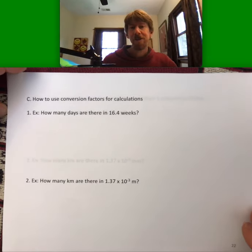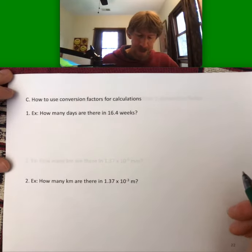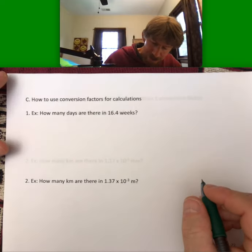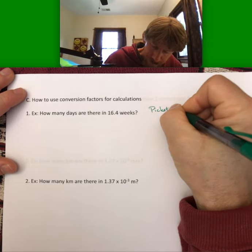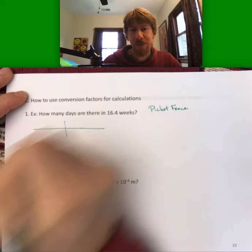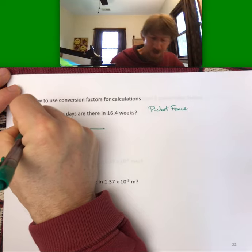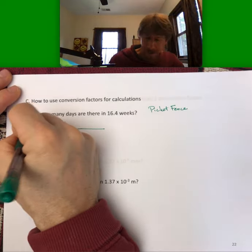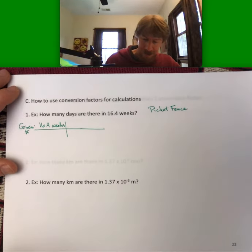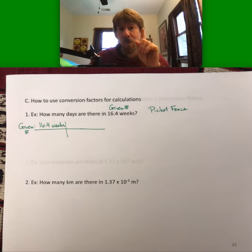Now let's do some actual calculations using unit conversion factors — some non-chemistry ones first. How many days are there in 16.4 weeks? The style of calculation I use is called the picket fence — also sometimes called the railroad tie or railroad lines. You put the number from the problem statement, your given number, on the top left.